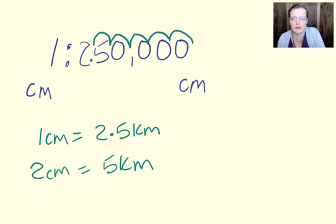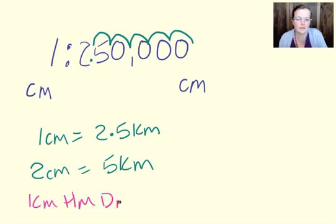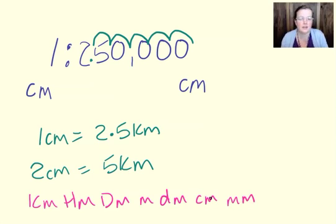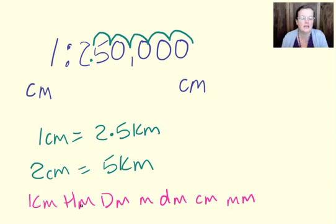Now how do we remember this? It goes kilometres, hectometres, decimetres — notice all capitals — metres, decimetres, centimetres, millimetres. Ten of those equals that: ten centimetres equals a decimetre, ten decimetres equals a decametre, ten metres equals a decametre, ten decametres equals a hectometre, ten hectometres equals a kilometre.